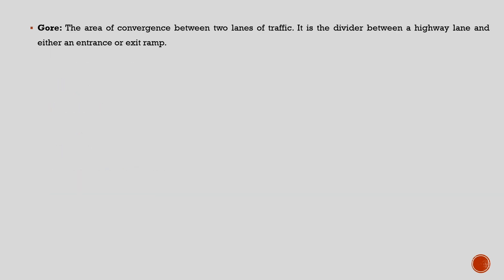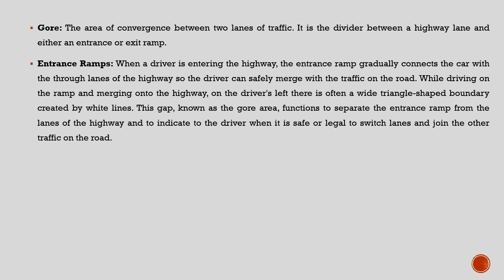GORE is the area of convergence between two lanes of traffic. It is the divider between a highway lane and either an entrance or an exit ramp. When a driver is entering the highway, the entrance ramp gradually connects the car with the through lanes of the highway so the driver can safely merge with the traffic on the road. While merging onto the highway, on the driver's left there is often a wide triangle-shaped boundary created by white lines, known as the GORE area, which functions to separate the entrance ramps from the lanes of the highway and to indicate when it is safe or legal to switch lanes and join traffic.